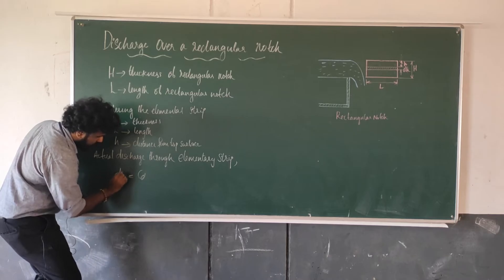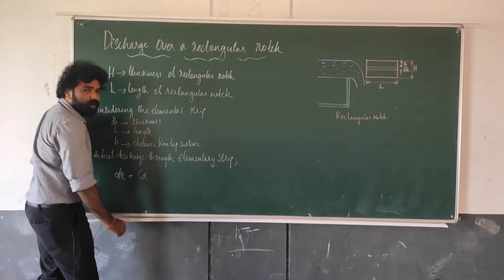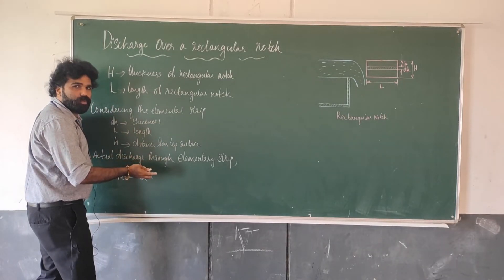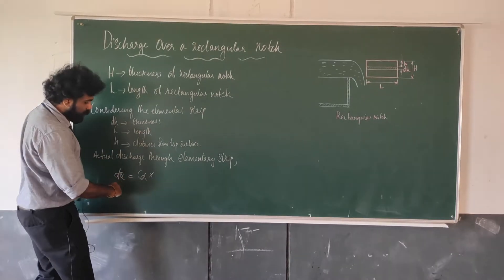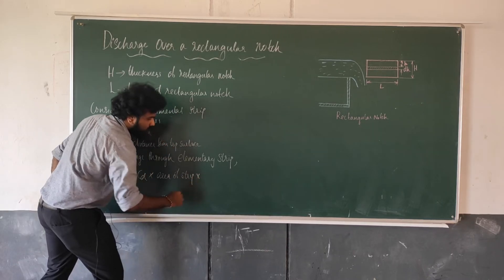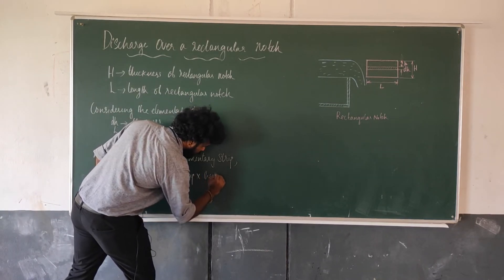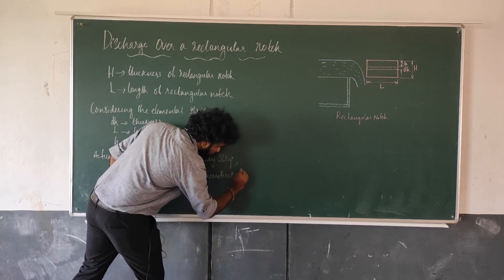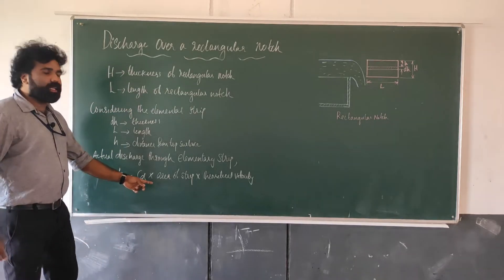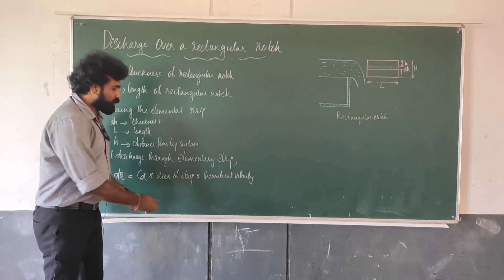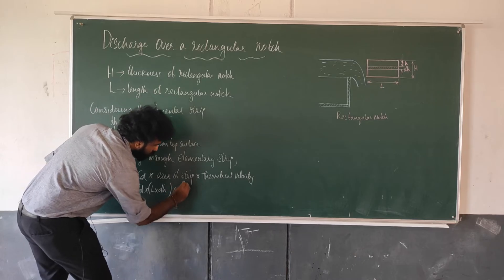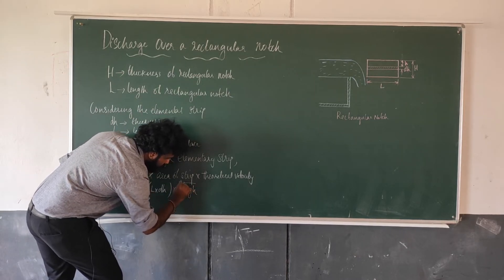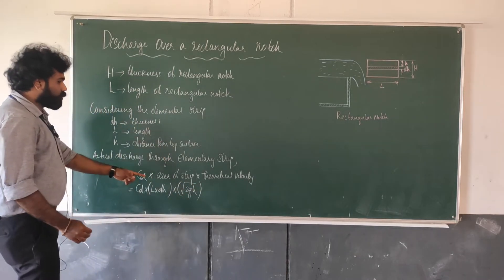The actual discharge through the elementary strip: dQ equals the actual discharge. dQ is equal to Cd into Q_theoretical. The actual discharge Q_actual equals Cd × Q_theoretical, because Cd equals Q_actual divided by Q_theoretical. So dQ equals Cd into area into velocity — that is the discharge formula: area into velocity.